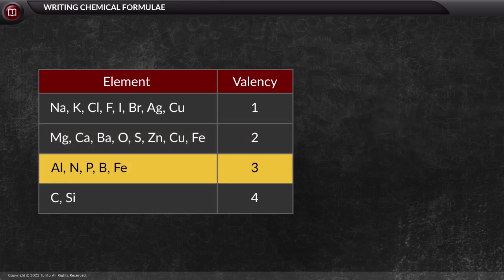When it comes to valency 3, you must remember 5 elements: aluminium, nitrogen, phosphorus, boron and iron.